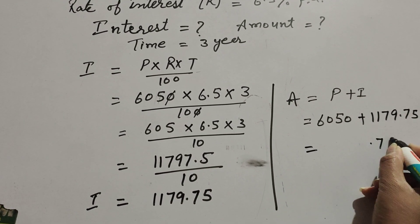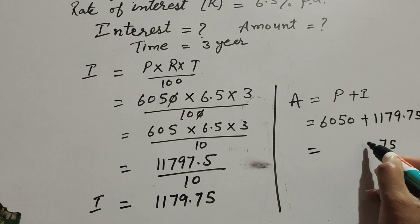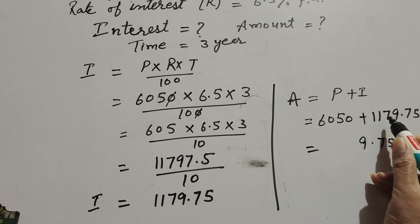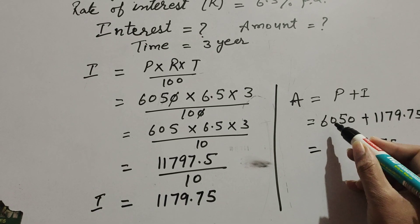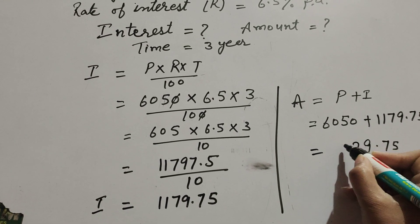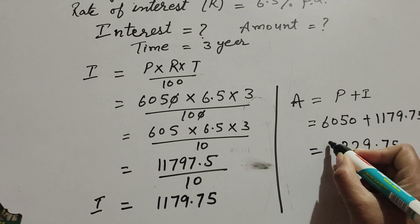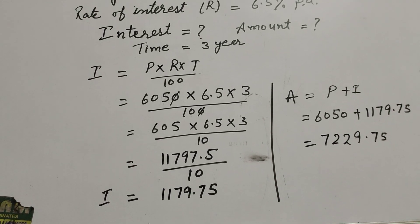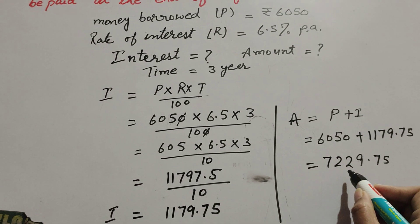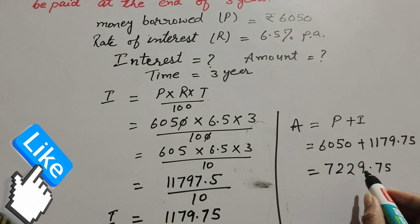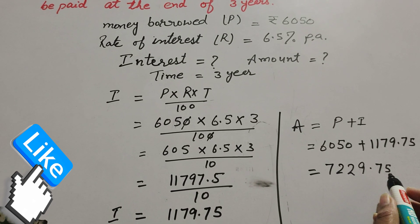Now we add them. 0.75, 9 plus 0 is 9, 5 plus 7 is 12, 0 plus 1 plus 1 carry, it is equal to 2, 6 plus 1 is 7. So 7229.75 is the total amount paid at the end of three years.